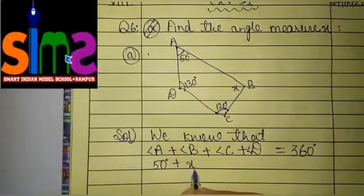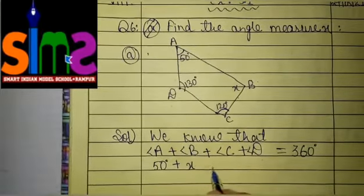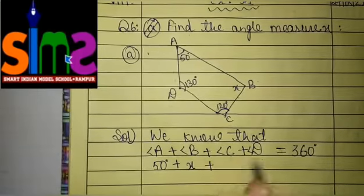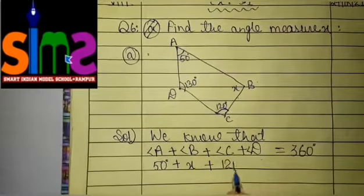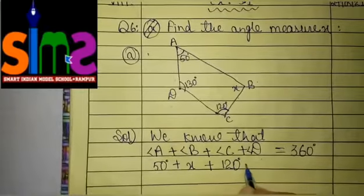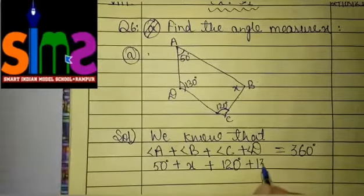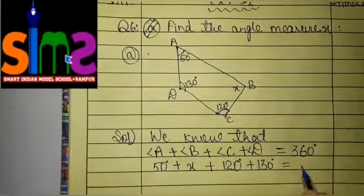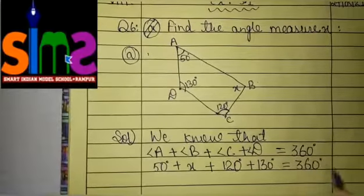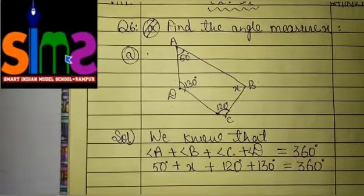It means we will write down X on the place of angle B. Then, plus, after that angle C is given 120 degree. So we will write down 120 degree plus angle D is given 130 degree. So we will note it down 130 degree and in equal to we will note down 360 degree as it is given.